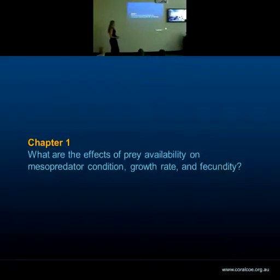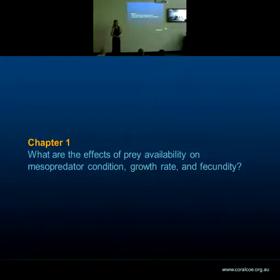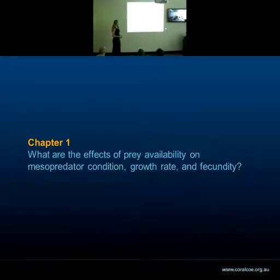The first chapter will address the question of what are the effects of changing prey availability on mesopredator condition, growth rates, and fecundity. This is a key question because being fairly long-lived species, many mesopredators are unlikely to show immediate impacts of habitat degradation in their abundance in communities. But this doesn't mean they're not having strong sublethal effects due to habitat degradation, and these may in the long-term impact quite substantially on the abundance and community structure.